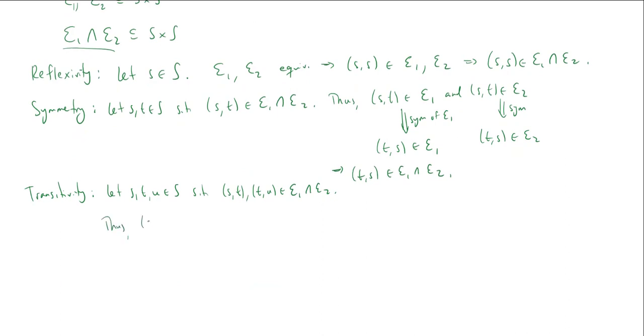Thus, we know that (s,t) and (t,u) are both in E1. If they're in the intersection, then they're in E1. And also, (s,t) and (t,u) are in E2. But now, by the transitivity of E1, we know that (s,u) is in E1. And by the transitivity of E2, we know that (s,u) is in E2. But if (s,u) is in both E1 and E2, then this implies that (s,u) is in the intersection.